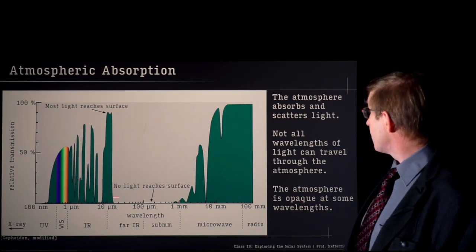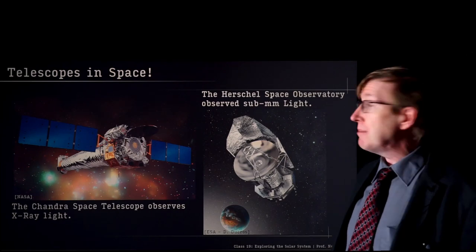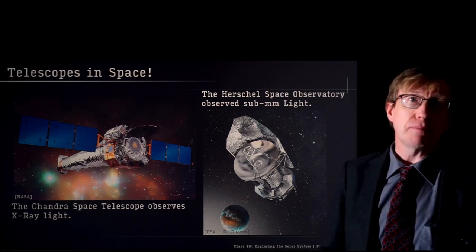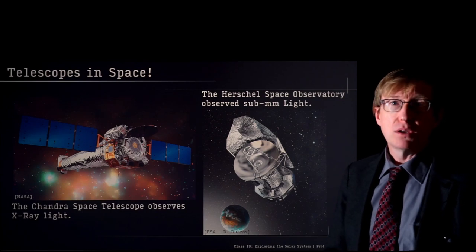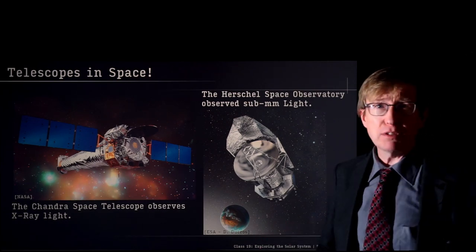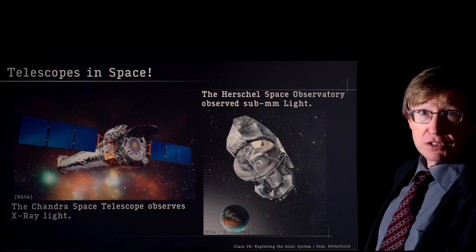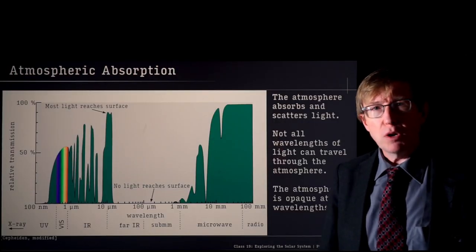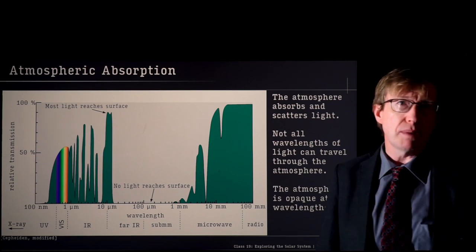So if you want to observe far infrared, submillimeter, or x-rays, you have to get out of the atmosphere. Consequently, NASA and the European Space Agency have built great satellite telescopes orbiting the Earth — or in the case of Herschel, at L2. The Chandra x-ray telescope can look at x-ray sources throughout the galaxy, and the Herschel Space Telescope can look at submillimeter sources throughout the universe.